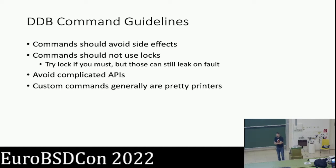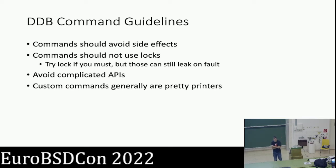One particularly useful use case for DDB compared to GDB — and one you cannot do on a crash dump, only live — is pretty-printing information about hardware state. For example, when I was working on x86 interrupt code, I wrote commands that would pretty-print state about the PICs, both the local APIC and how we had allocated our cookies and which IDT vectors inside each local APIC we had routed them to, so I could dump that table and look for mismatches.